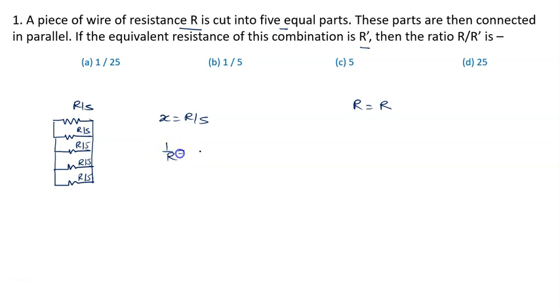We know 1 upon R is given by 1 by R1 plus 1 by R2 plus 1 by R3 plus 1 by R4 plus 1 by R5. It means 1 by R can be written as 5 upon X.